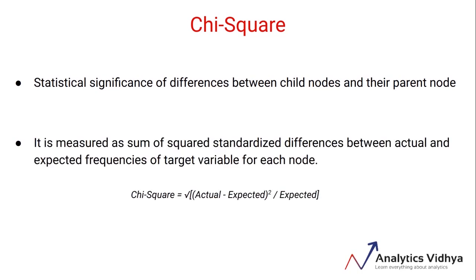Chi-square is measured as the sum of squared standardized differences between observed and expected frequencies of the target variable for each node, and is calculated using the formula that you can see here. Now let's see how we can calculate the expected values.